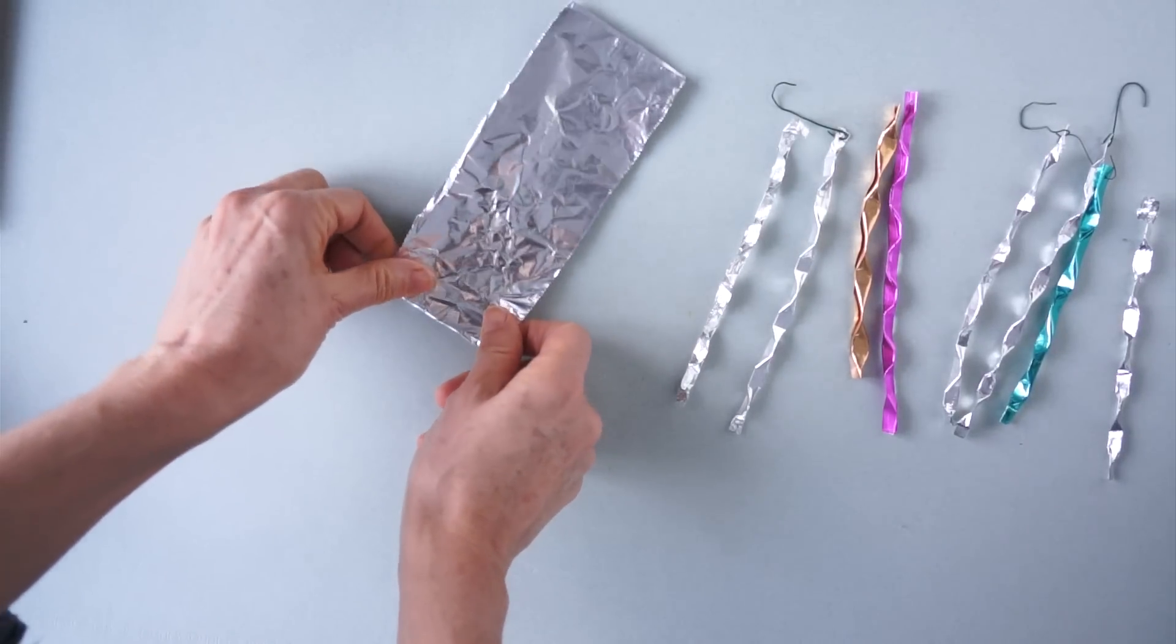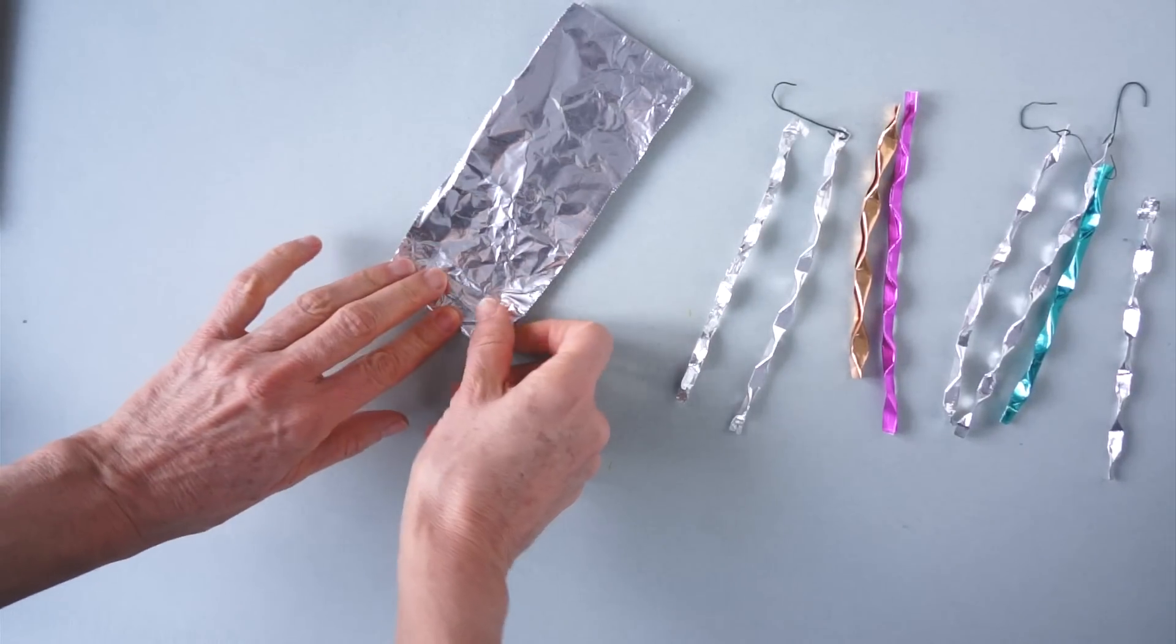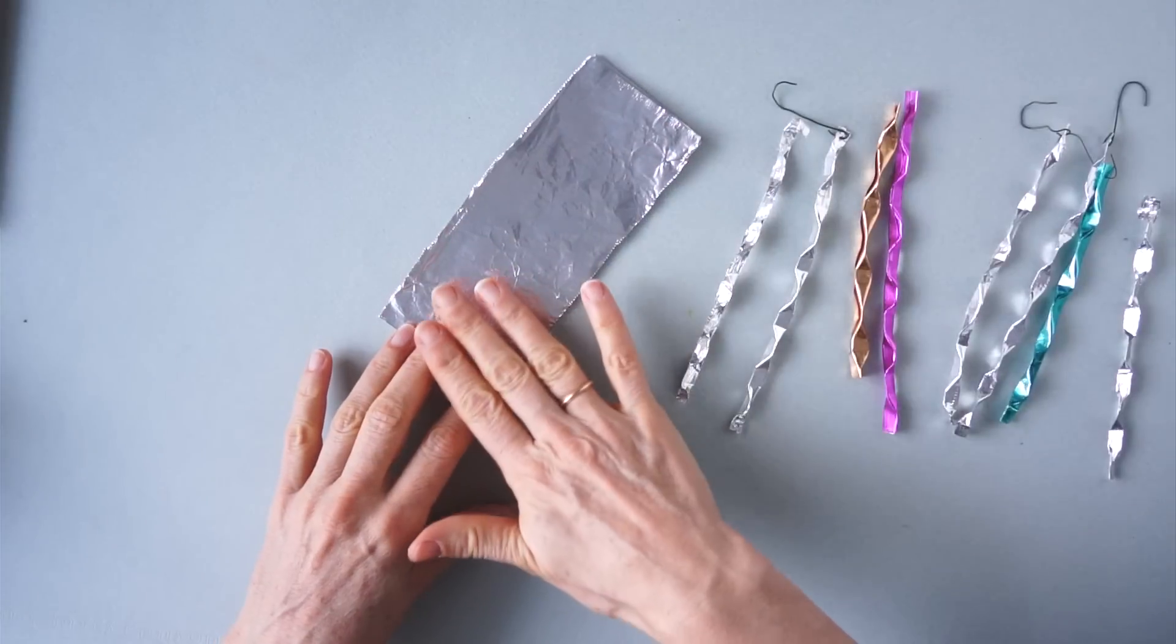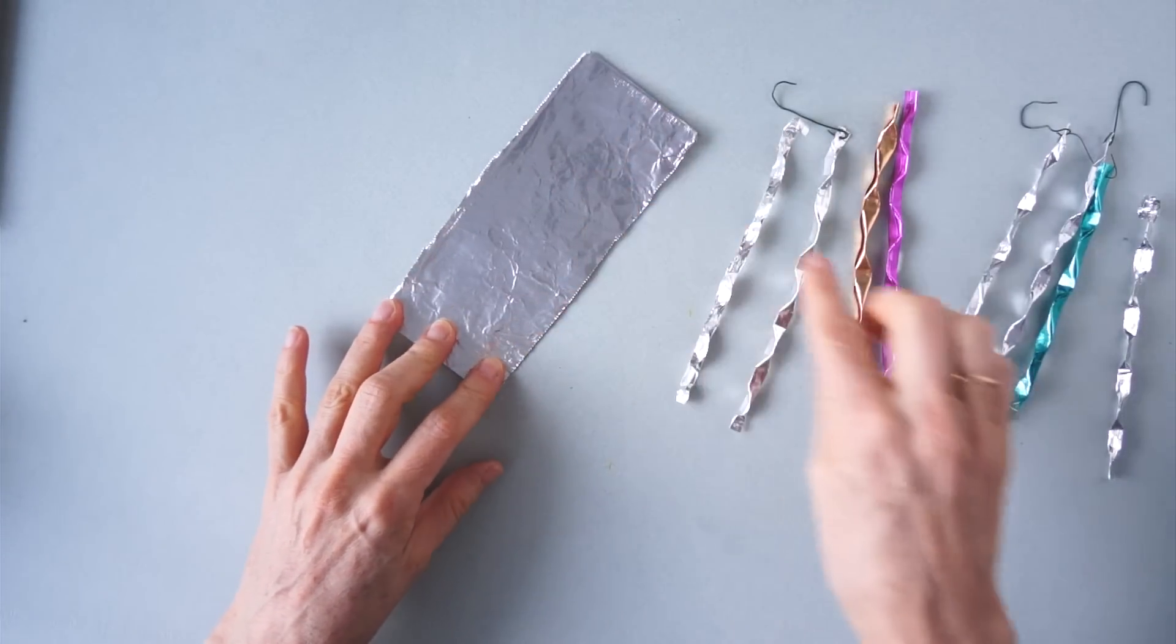This is a 12 inch strip. When folded this is about 6 inches. By folding we make 2 layers and this will make it stronger.